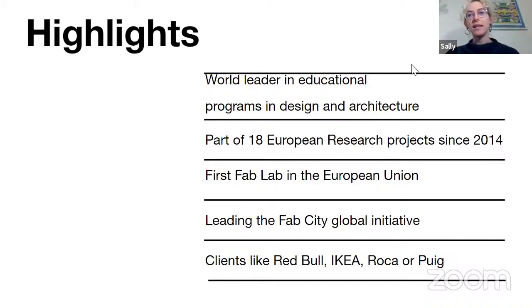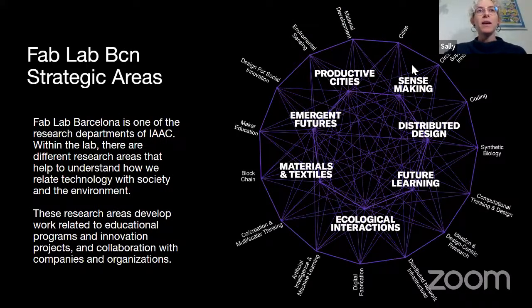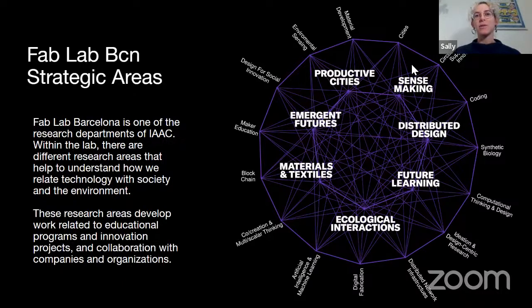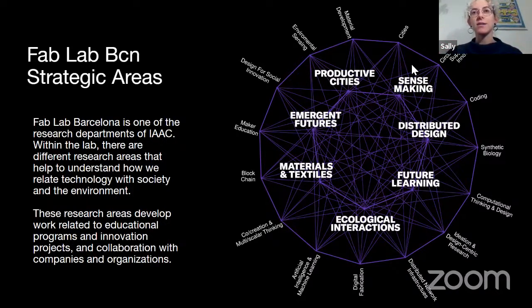We do work with a lot of different clients, local and international. Some of those names include Red Bull, Ikea, Raka, and Pooj. At FabLab, we operate through the lens of eight different strategic areas: productive cities, sense making, distributed design, future learning, ecological interactions, materials and textiles, and emergent futures. These really interconnect and overlap quite a lot — we do future learning with distributed design, ecological interactions with emergent futures. These are just some of the ways we try to organize what it is that we're trying to do.